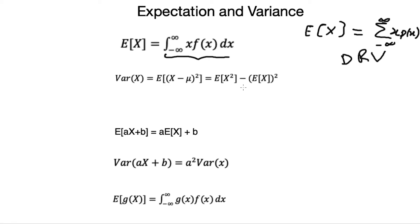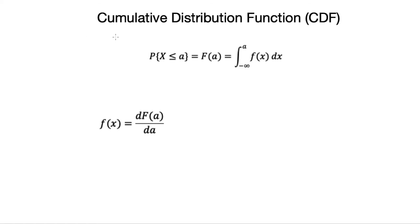The variance has the same expression as in the discrete case. Expectation and variance also share the same properties: expectation is linear, so E[aX + b] = aE[X] + b, and Var(aX + b) = a²·Var(X). The expectation of a function g(X) of a random variable X is the integral from negative infinity to infinity of g(x)·f(x) dx.